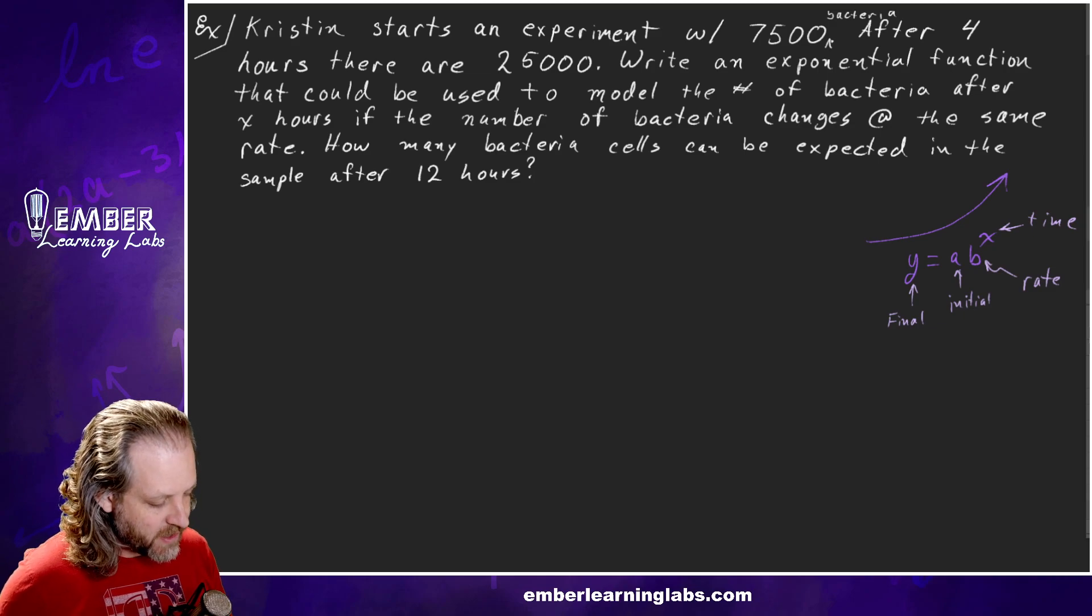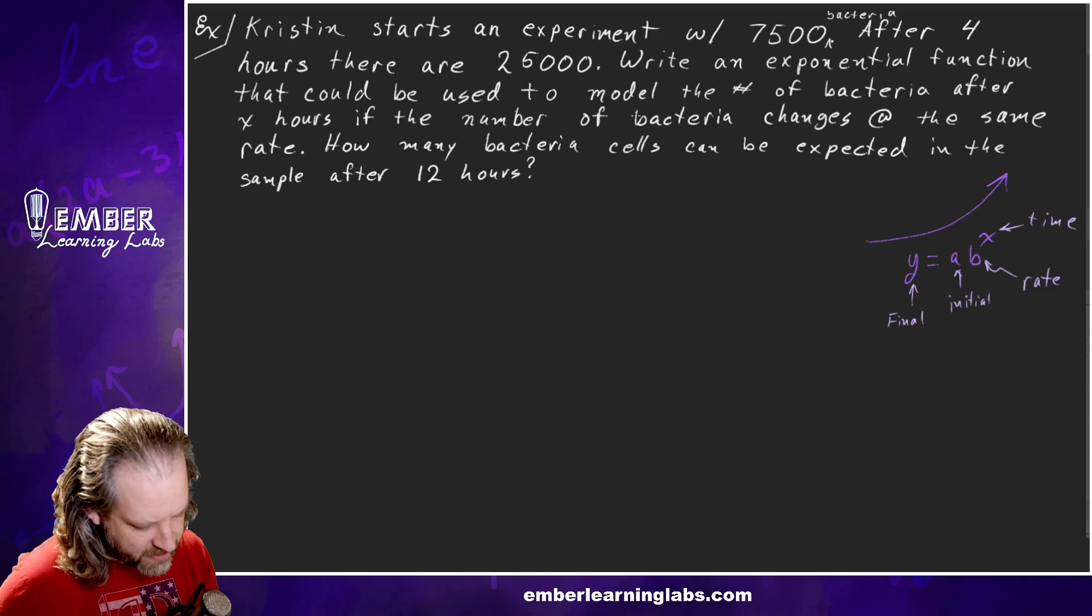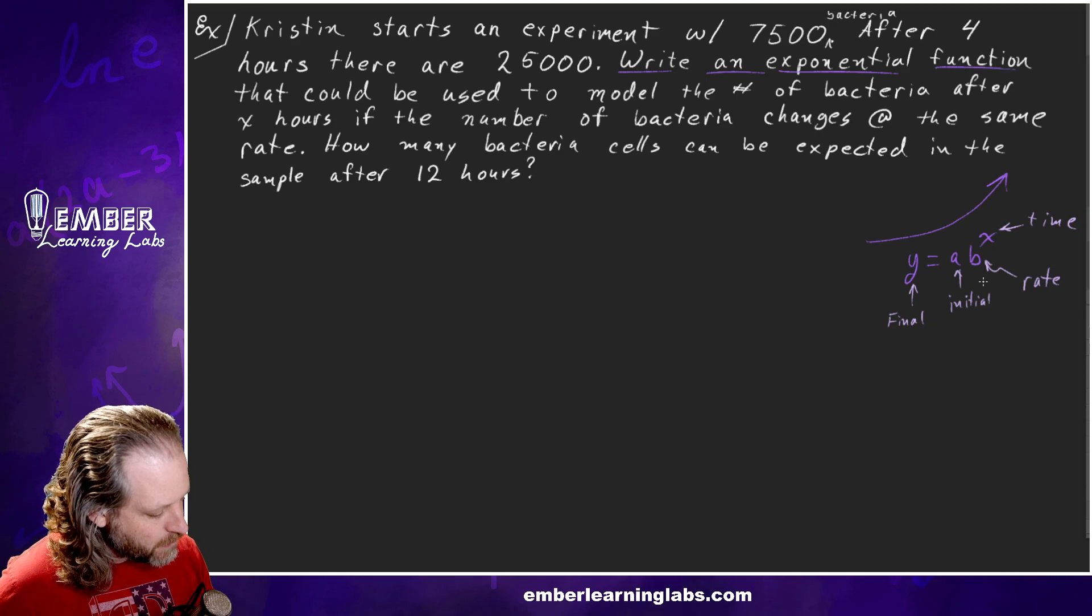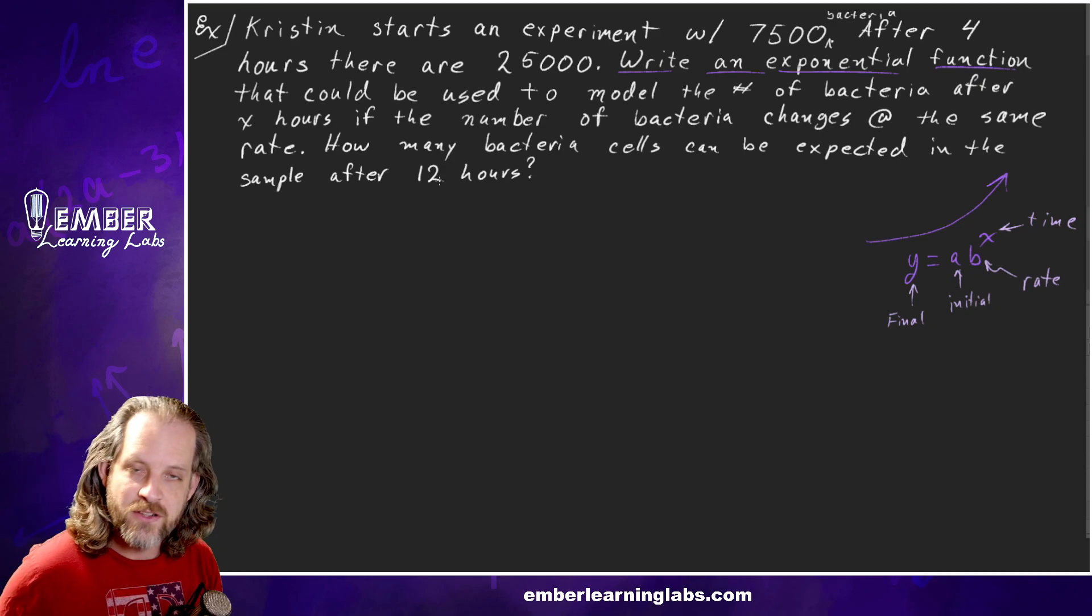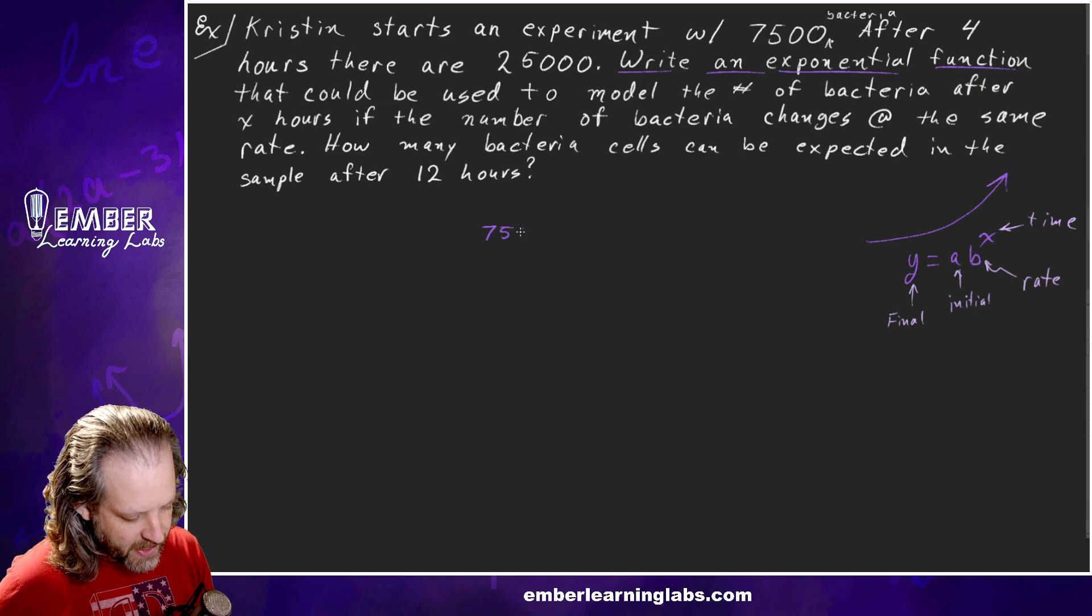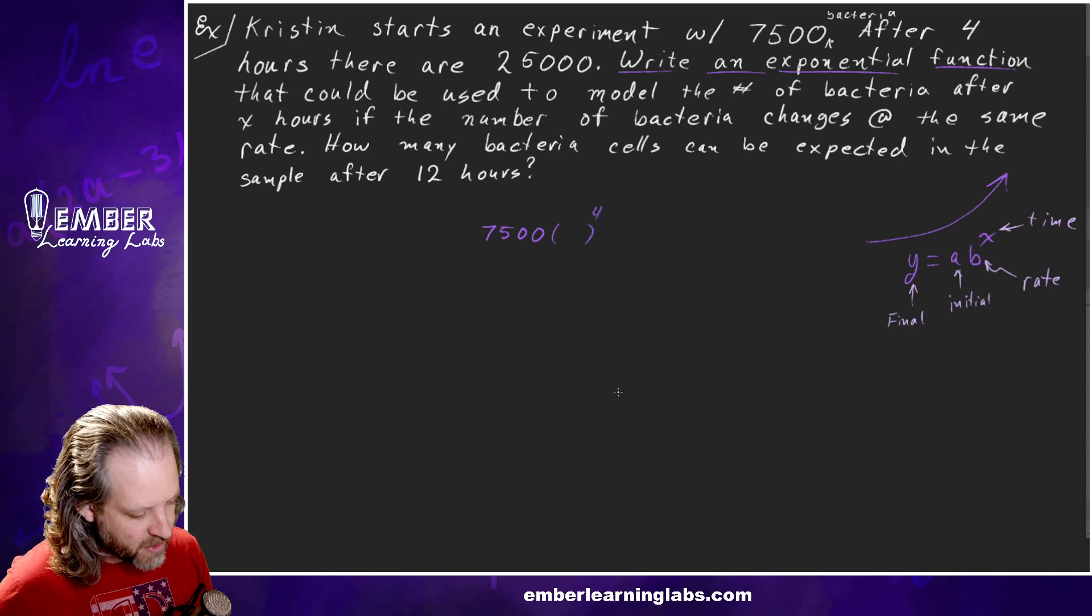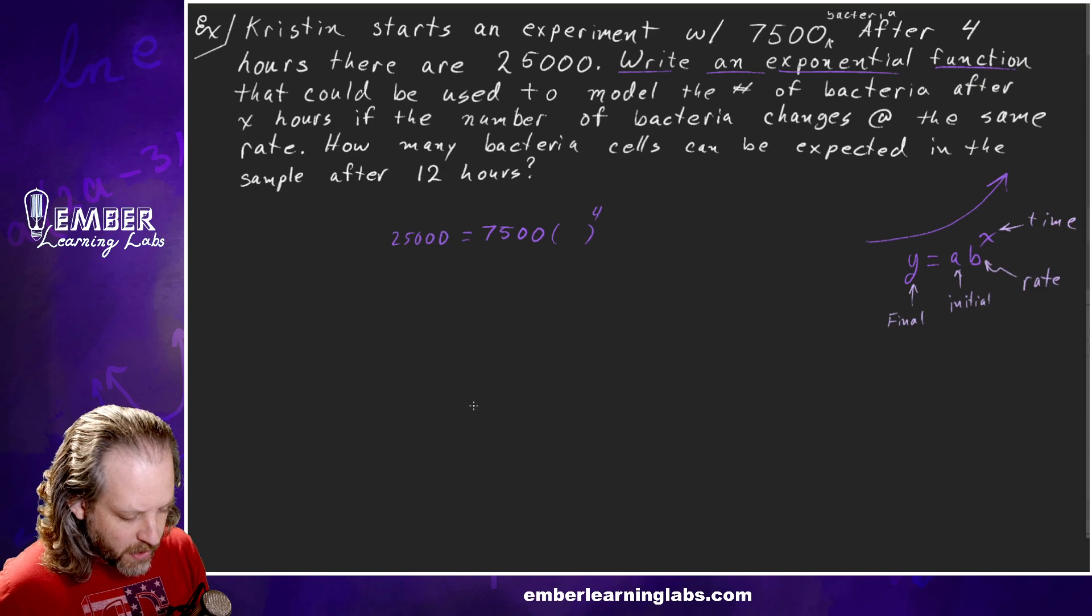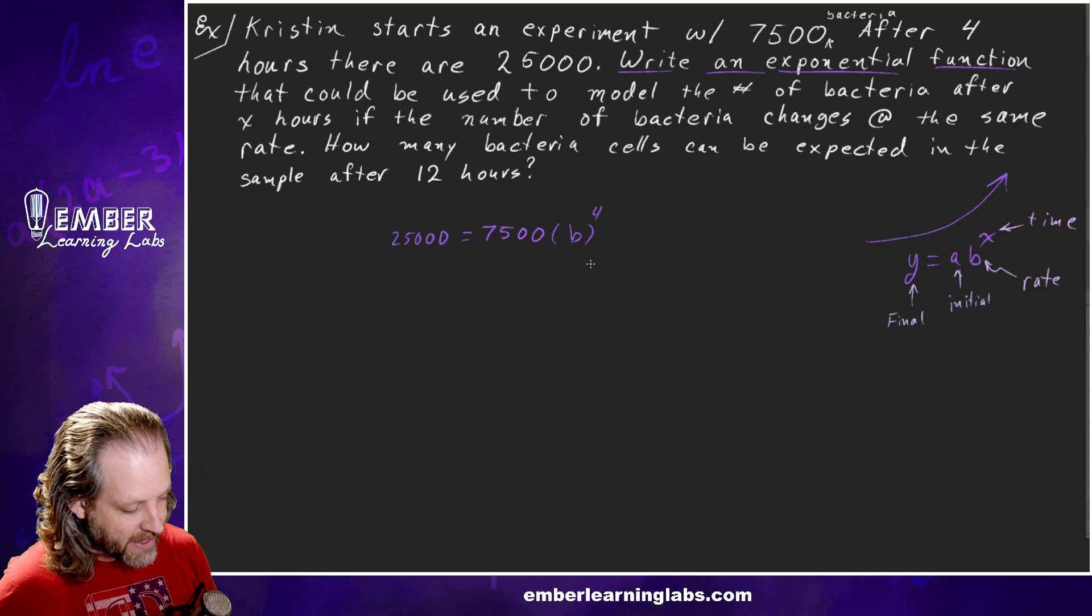Let's start plugging things in and see if we can get what we need. We need a number here and a number there to answer this part where it says write an exponential function. So we need a and b to be numbers. The y and the x can stay generic for our exponential function. Then when we actually plug something into it, we'll do that in a minute. Let's write down what we have. We started with 7,500, so that's a = 7,500. And then after four hours, so that's the time = 4 hours, there are 25,000. So that's 25,000. What are we missing from our generic thing? We're missing that b. So we need to figure out what b is in order to solve and write an exponential function.